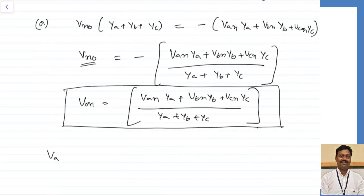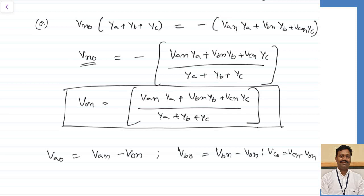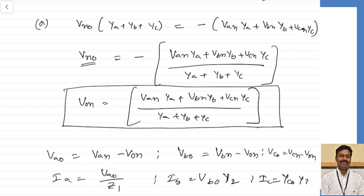Once VON is obtained, the phase voltages across each impedance are: VAO = VAN − VON, VBO = VBN − VON, and VCO = VCN − VON. From these voltages I can calculate the currents: IA = VAO × Y1, IB = VBO × Y2, and IC = VCO × Y3.